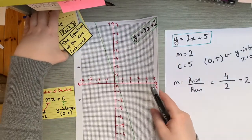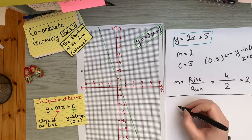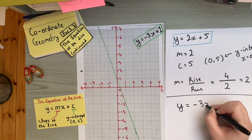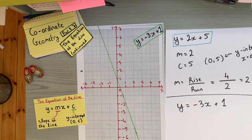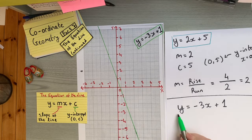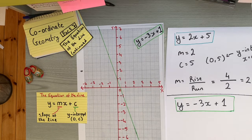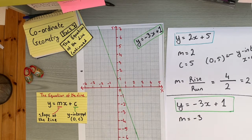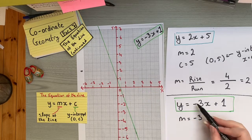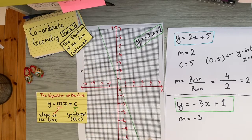The other example from the last video involves a negative slope, visible from the diagram. The equation of this green line is y = -3x + 1. We need to find the slope and the y-intercept. The slope is the coefficient of x — be careful, the minus sign goes with it — so m = -3. You can see from the diagram it has a negative slope.